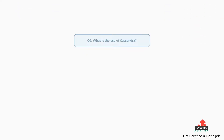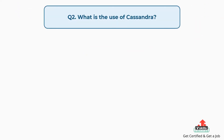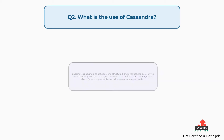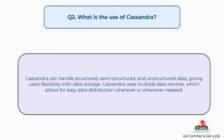Question number two: What is the use of Cassandra? Cassandra can handle structured, semi-structured, and unstructured data, giving users flexibility with data storage. Cassandra uses multiple data centers, which allows for easy data distribution wherever or whenever needed.